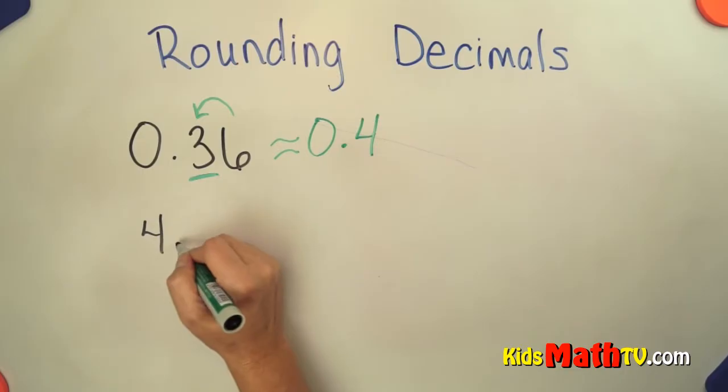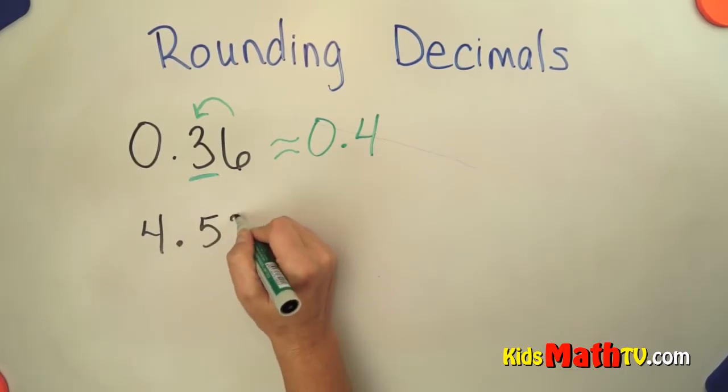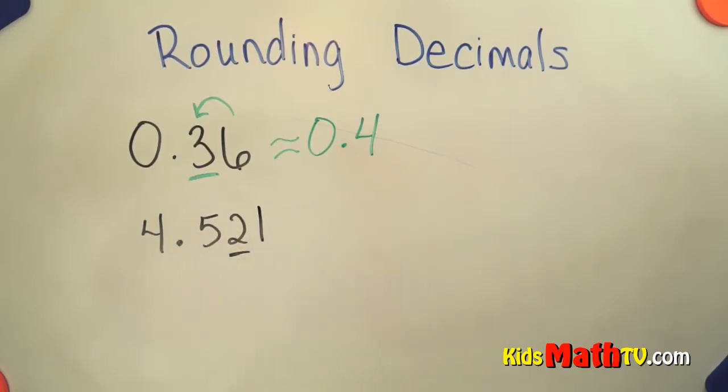Let's try another one. How about 4 and 521 thousandths. We are going to round to the hundredths place.